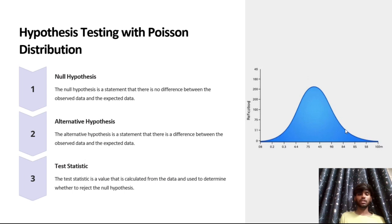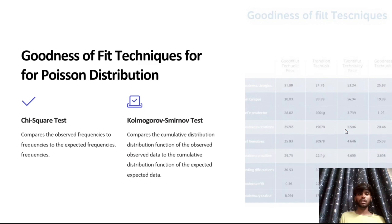The alternative hypothesis is a statement that there is a difference between the observed data and the expected data. The test statistic is a value that is calculated from the data and used to determine whether to reject the null hypothesis.